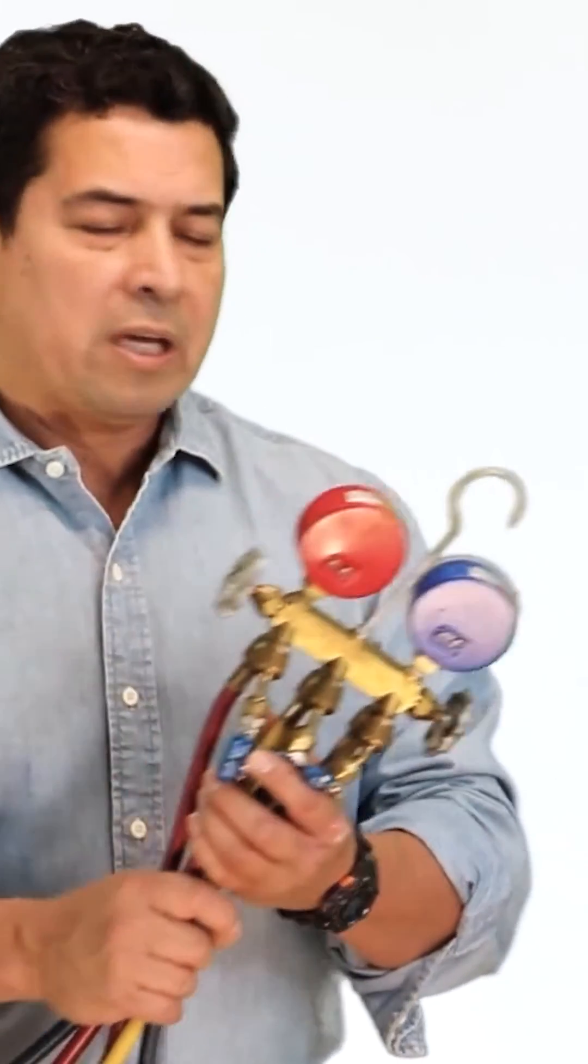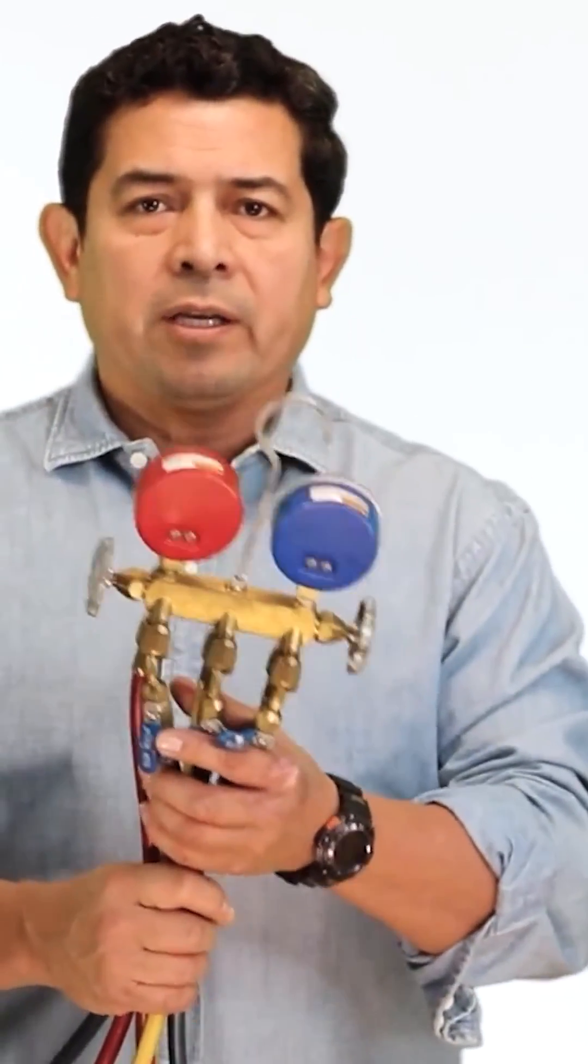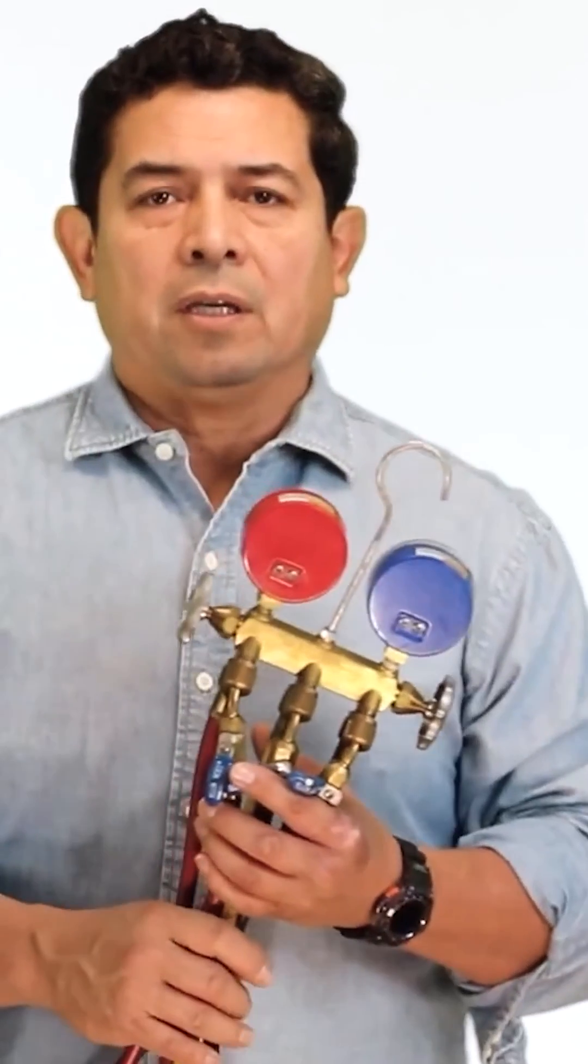Two or three, because you may have one for R22, one for 410A, one for 407C, and so on.